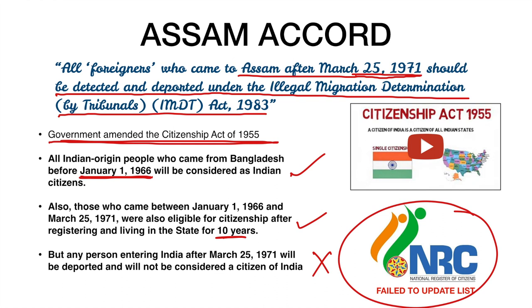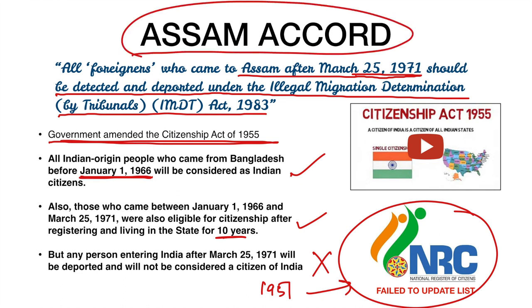Though the register was first prepared after the 1951 Census of India, it has not been updated after 1951. After the Assam Accord was signed, the NRC was still not updated properly because it failed to identify who the illegal immigrants are. Literally nothing happened — the NRC was not updated.